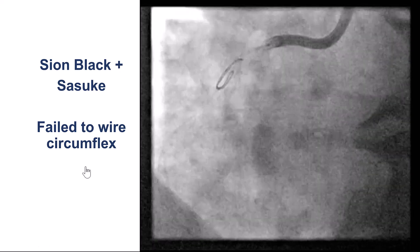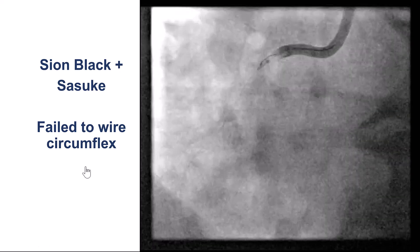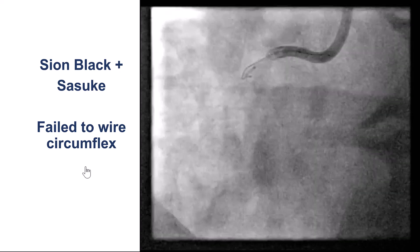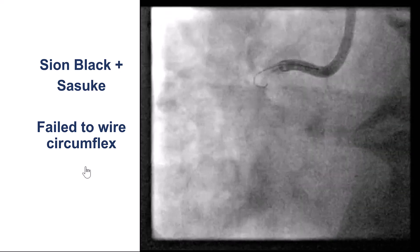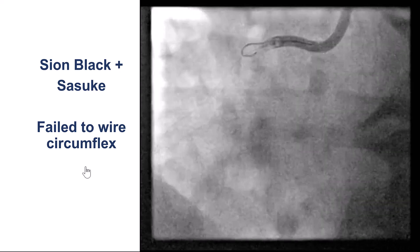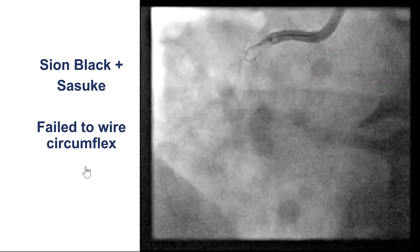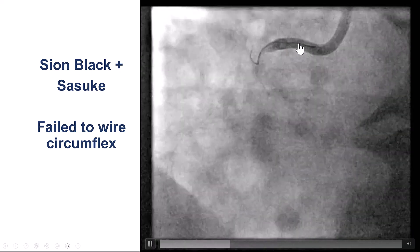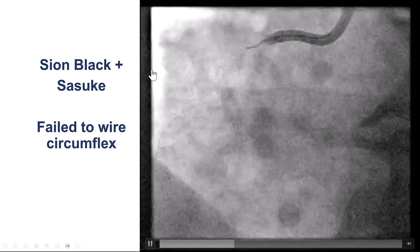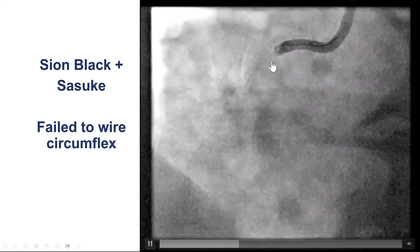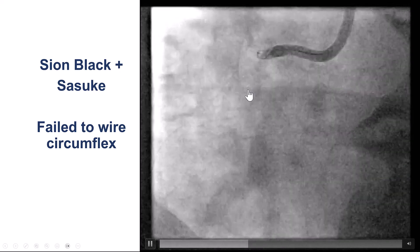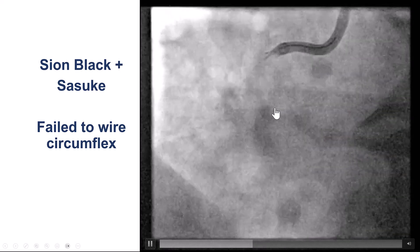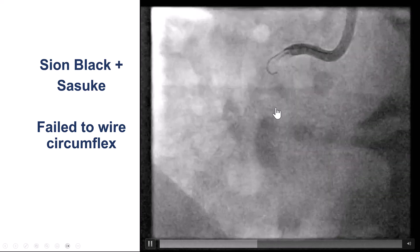The issue was how to get into the circumflex, which had a fairly angulated origin. We tried with various wires, including workhorse wires as well as the Sion Black. We tried with the single-lumen as well as the dual-lumen Sasuke microcatheter, but we were unable to get the wire to go into the circumflex.